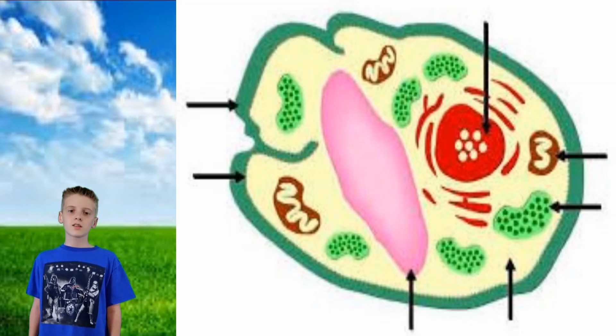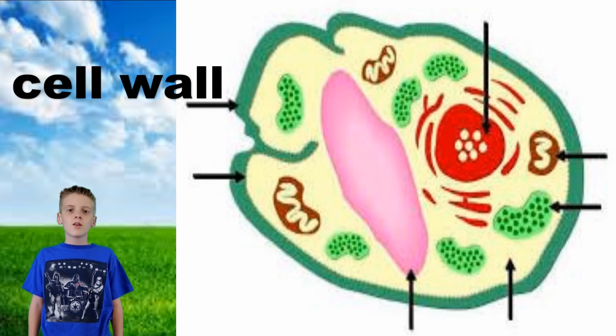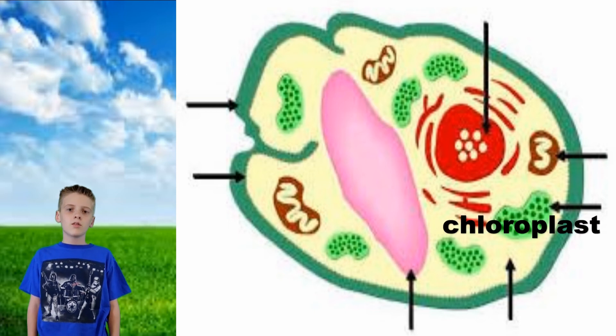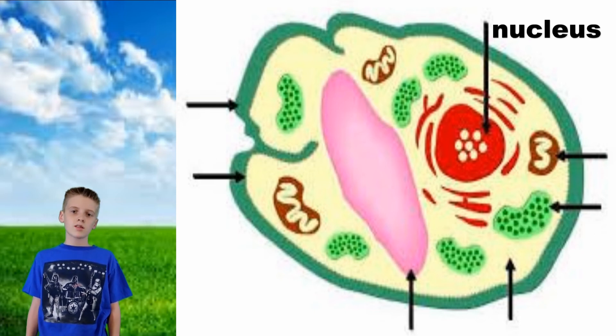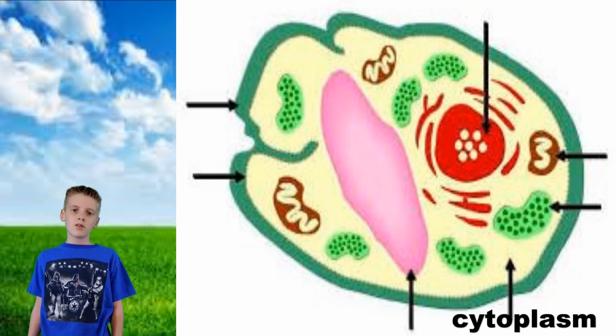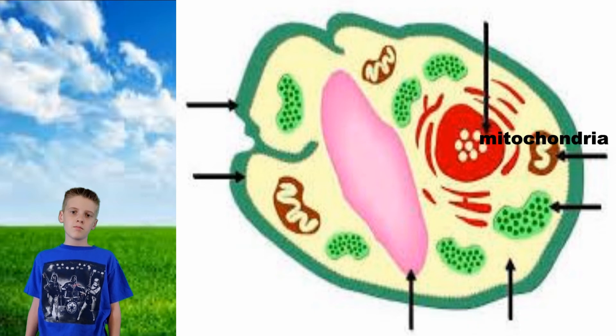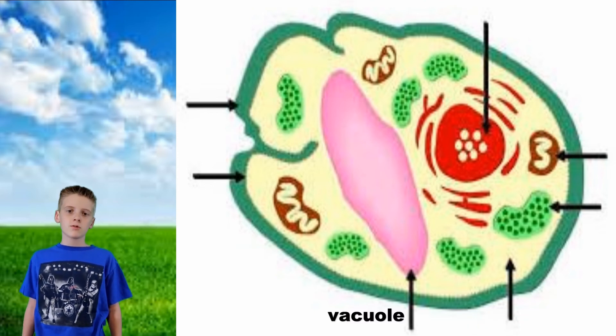A plant cell is made up of many different organelles. These organelles include cell wall, chloroplast, cell membrane, nucleus, cytoplasm, mitochondria, and vacuoles.